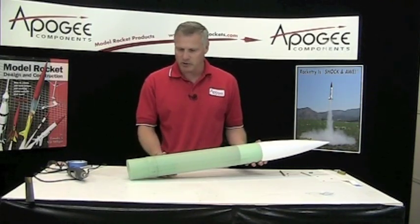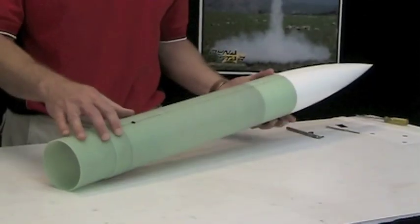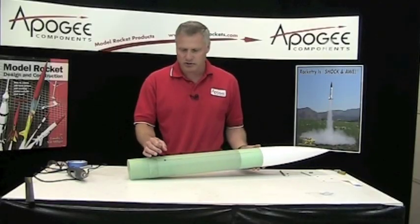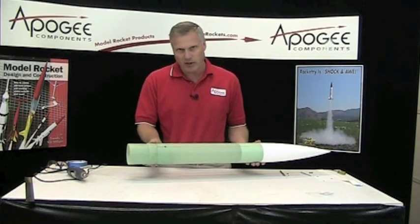This is a dual deployment rocket and the E-bay is right here. For the E-bay we're using the removable rivets, and these are so thick that they won't shear.